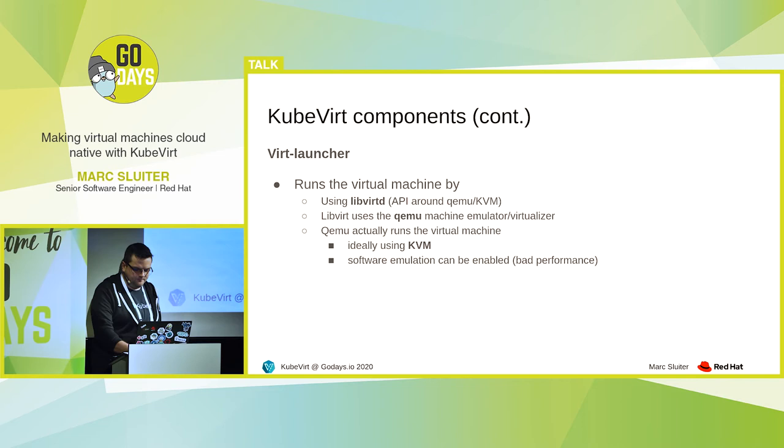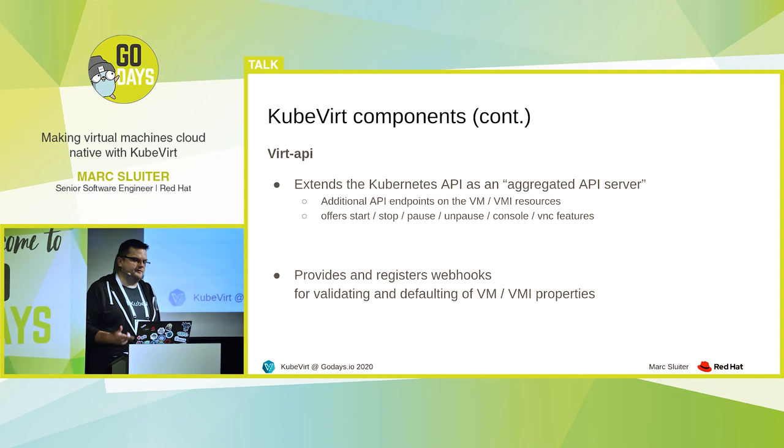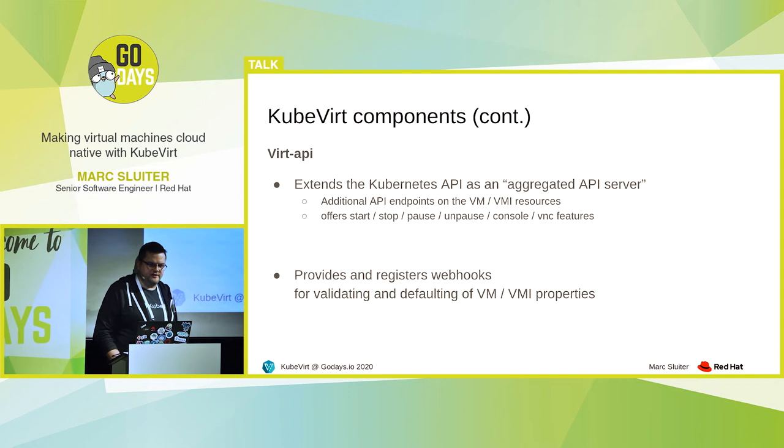Then we have the virt API server. This implements two things. The first one is an aggregated API server providing more REST endpoints for the running virtual machines — like starting, stopping, pausing, unpausing, and connecting to the console. It also provides some webhooks which are used for validating virtual machines and virtual machine instances, and for setting some default values if they are not set by you.